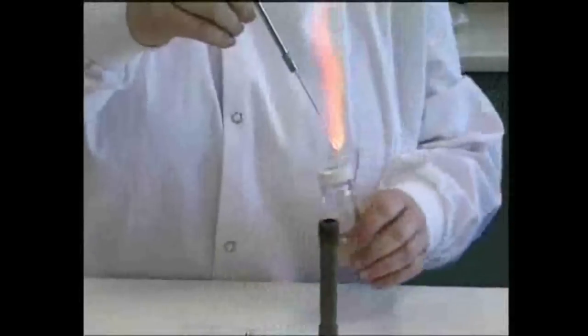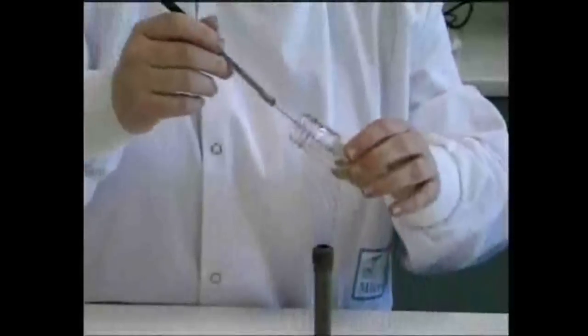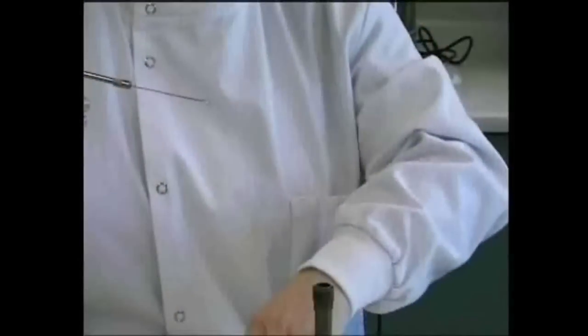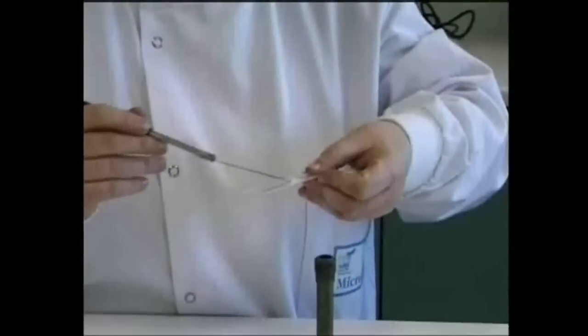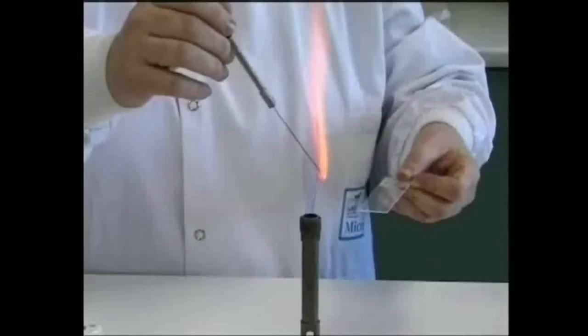If you're using a broth culture for your stain, shake the bottle to suspend the cells, and then place a loopful of broth on the slide, omitting the water. Re-flame the loop when you've finished.